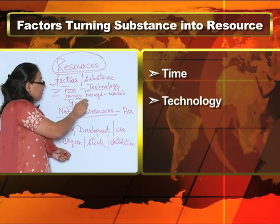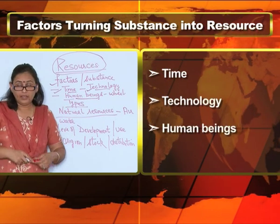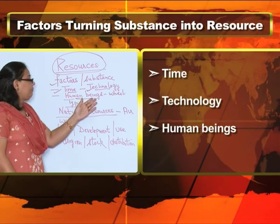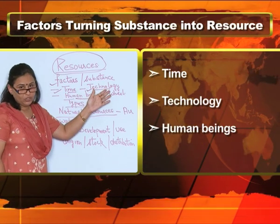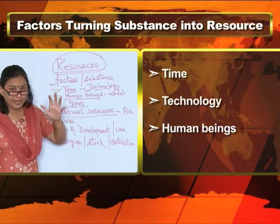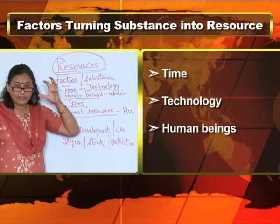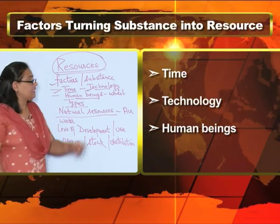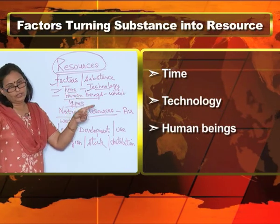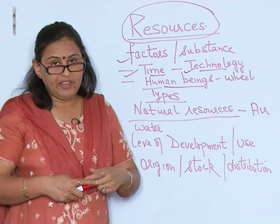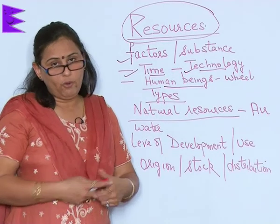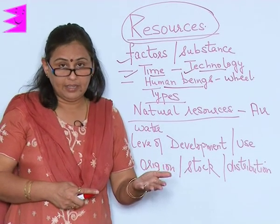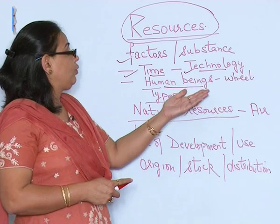Human beings are themselves the biggest resource, because they use technology, they use their brain, and they use their hands to turn a substance into a resource. So human beings are in fact the father of all resources — they are the ones turning substances into resources.